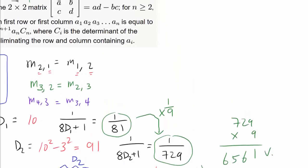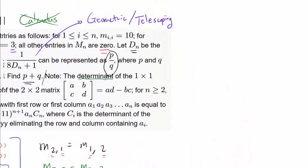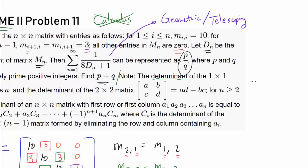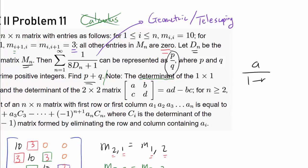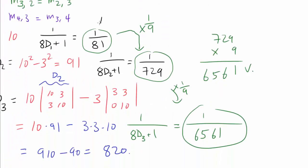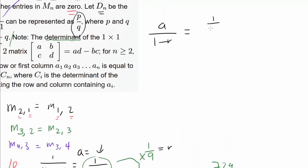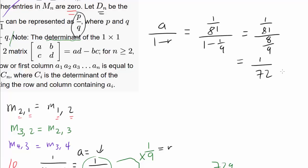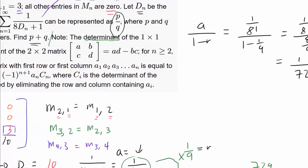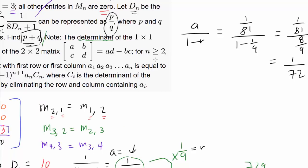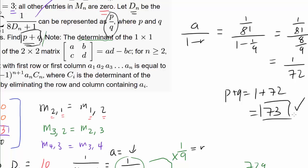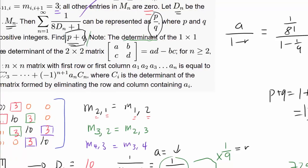So we may conjecture this is an infinite geometric series. The value is A over (1 minus r), with first term 1/81 and common ratio 1/9. Plugging that in: 1/81 divided by (1 minus 1/9) equals 1/81 divided by 8/9, which equals 1/72. So P over Q is 1/72, meaning P plus Q is 1 plus 72, which is 73. And it turns out we are right — the answer is 73, and this summation is indeed an infinite geometric series. But we haven't proved it yet.